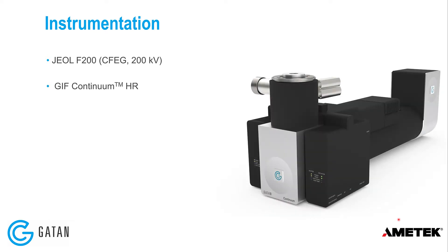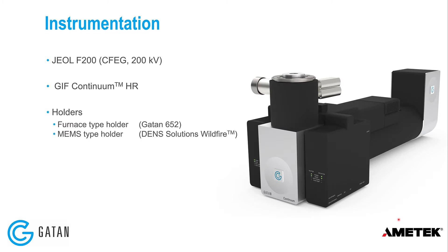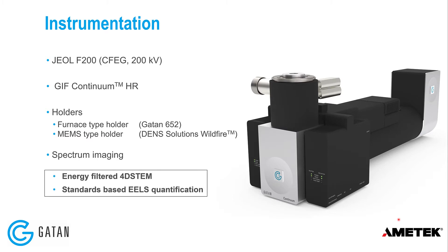The instrumentation used for this work includes a JEOL F200 scanning transmission electron microscope, a GIF Continuum HR energy loss spectrometer, and two heating holders — a furnace-type holder and a MEMS-type holder. All of the work was done in spectrum imaging, either energy-filtered 4D STEM or standards-based EELS quantification.